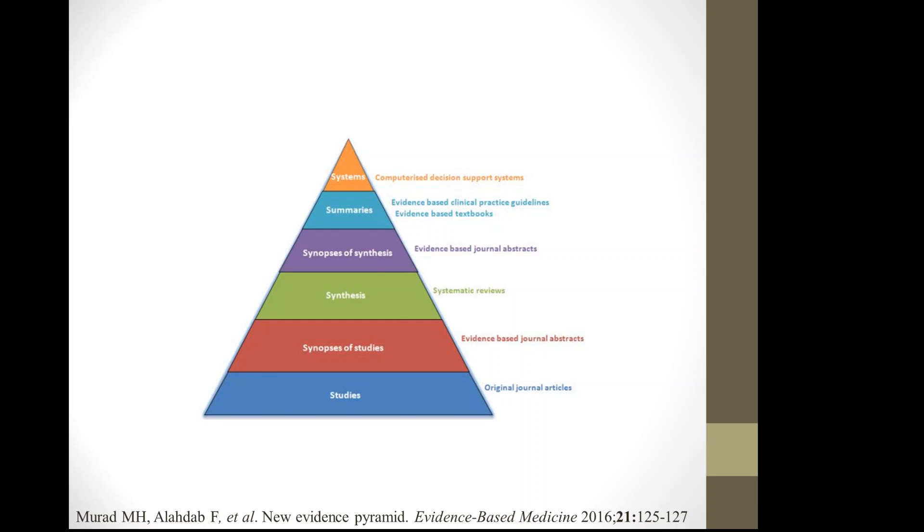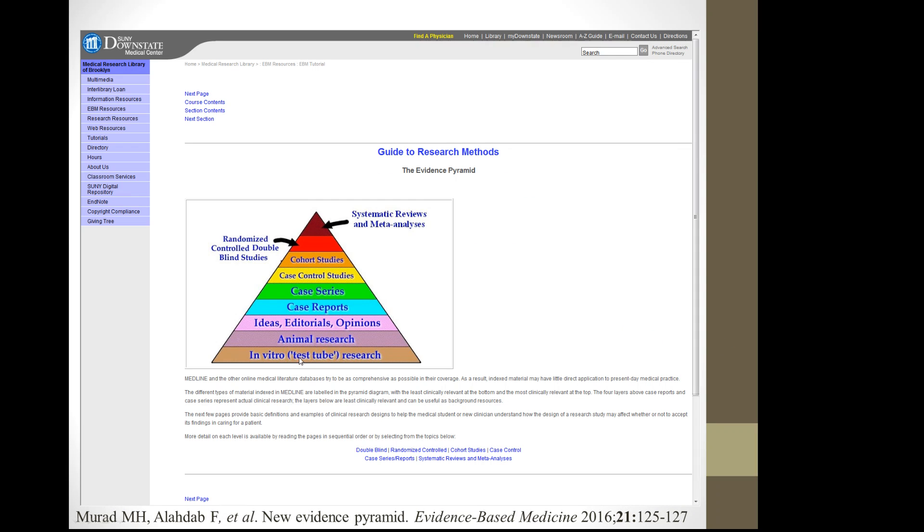Since evidence was described as a hierarchy, the compelling rationale to use a pyramid to visualize that was made at the time. And since then several versions of this pyramid have been described, but all of them focused on showing weaker study designs at the bottom.